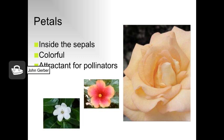Petals are located just inside the sepals of the developing flower. Petals appear leaf-like and are often very colorful. The function of these bright-colored petals is to attract pollinators.